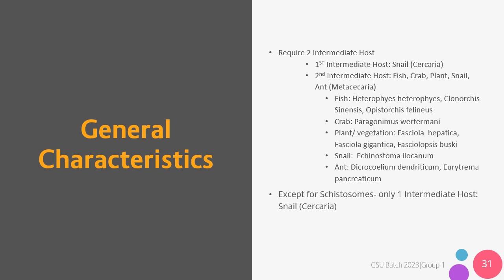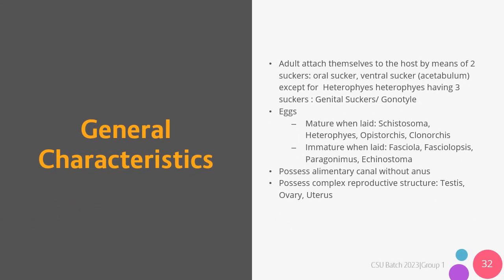For Echinostoma ilocanum, their intermediate host is the snail. And lastly, for Dicrocoelium dendriticum and Eurytrema pancreaticum, their intermediate host is the ant. Except for the schistosomes, they only have one intermediate host, which is the snail. The snail harbors the infectious form of the schistosomes, which is the cercariae. The adult form of the flukes attach themselves to the host by means of two suckers: an oral sucker and a ventral sucker, or the acetabulum. Except for the organism Heterophyes heterophyes, which has three suckers: an oral sucker, ventral sucker, and a genital sucker or gonotyl.